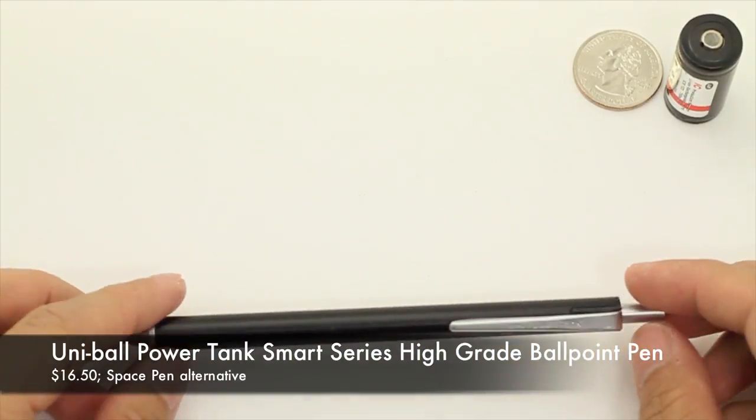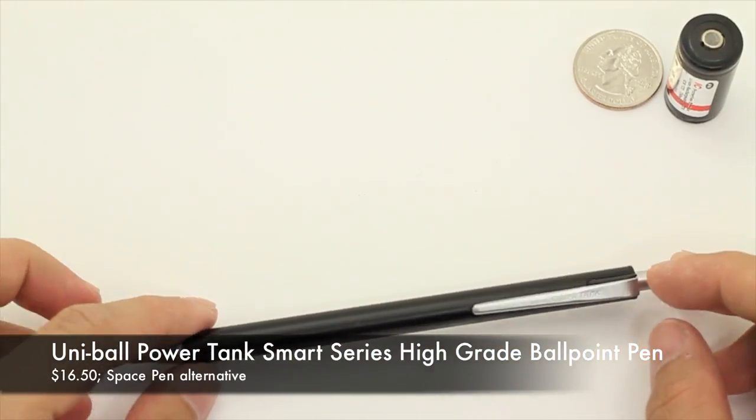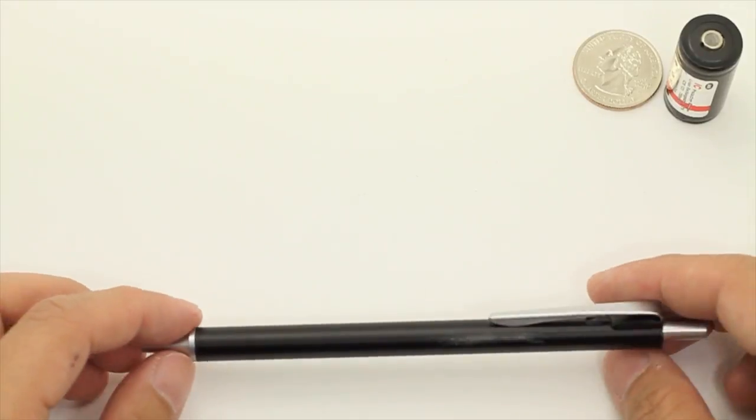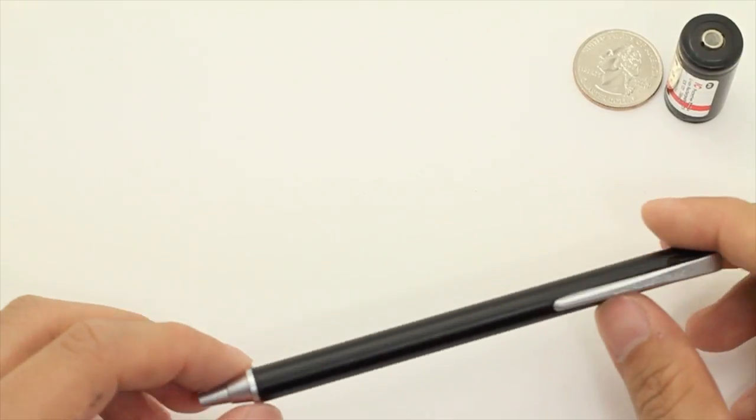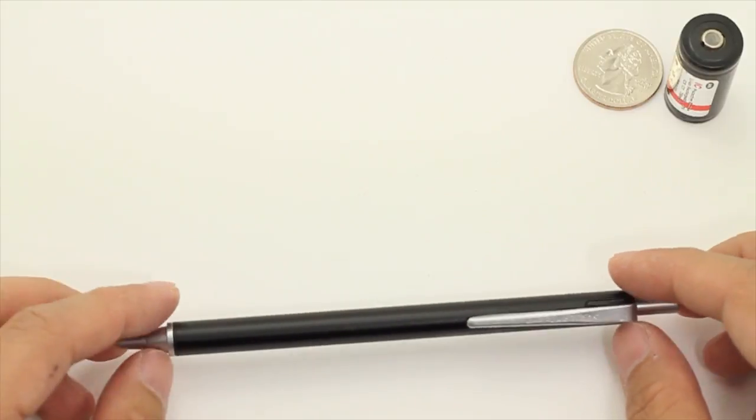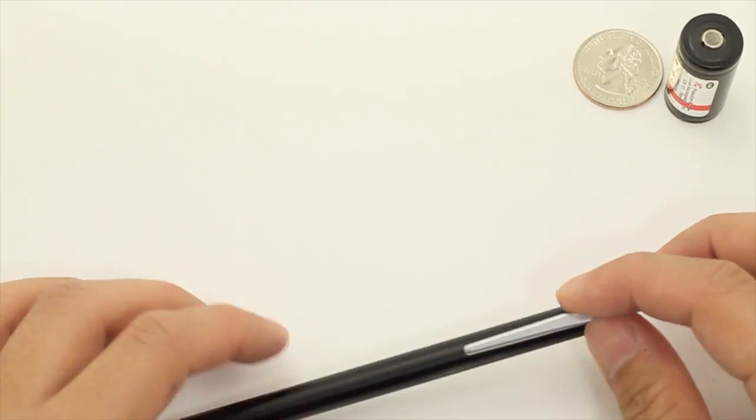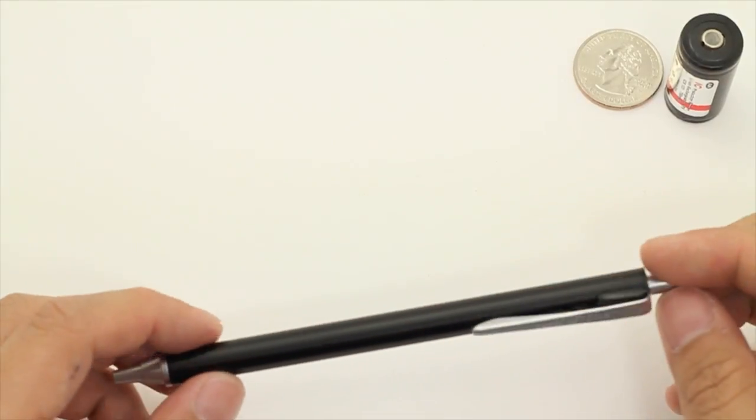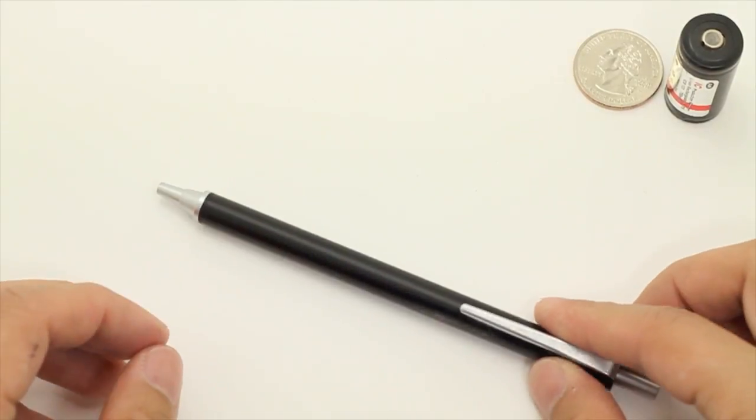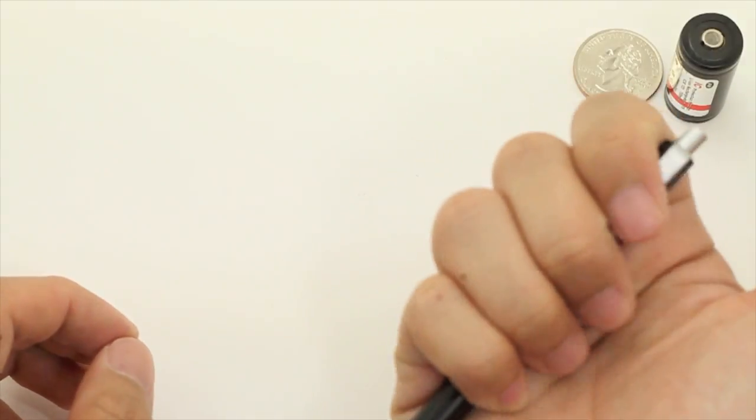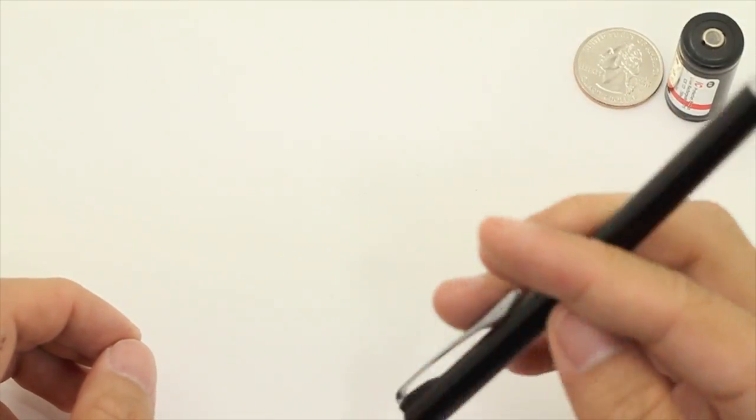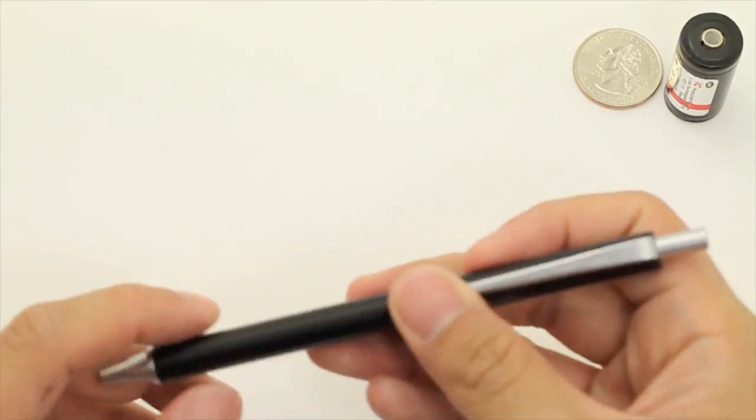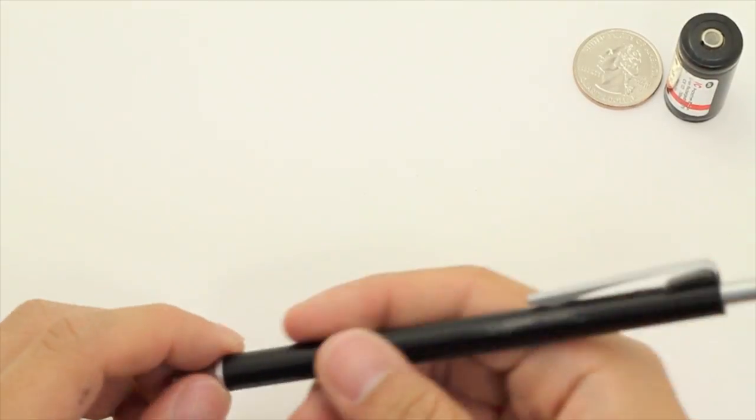This is the Uniball Power Tank Smart Series High Grade. This is a full size pen, .7 ballpoint ink with a pressurized cartridge, making it an attractive alternative to Fisher Space pens if people want a full size body with a clip and a clicky. So the clip and the clicky are both pretty nice, and it allows for a quick retrieval and activation. One thing that I don't like about it is that the clicky kind of jiggles around a bit loosely, but otherwise it feels great at hand.